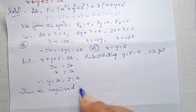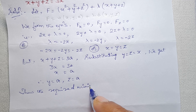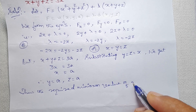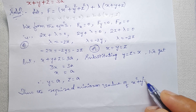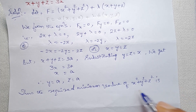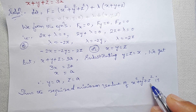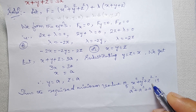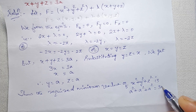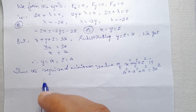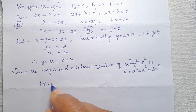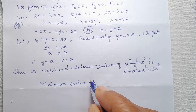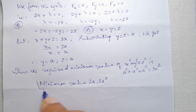The required minimum value of x² + y² + z² = a² + a² + a² = 3a². The minimum value is 3a².